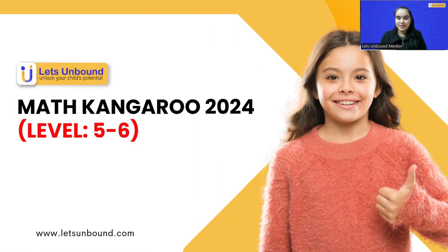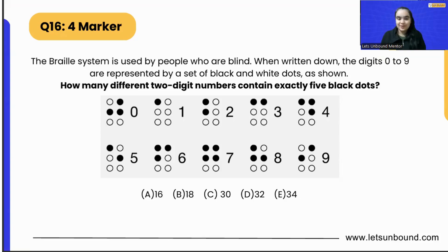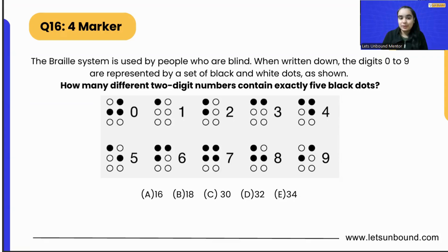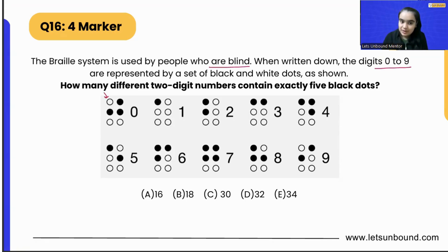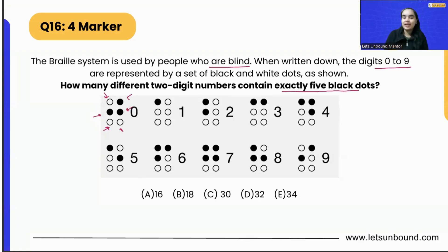Hello everyone, welcome to Let's Unbound. In today's video we are going to discuss the 16th problem that came as a four-marker in Math Kangaroo grades 5 and 6. The question is: the Braille system is used by people who are blind. When written down, the digits 0 to 9 are represented by a set of black and white dots as shown — you can see over here how 0 is represented with white dots and black dots.